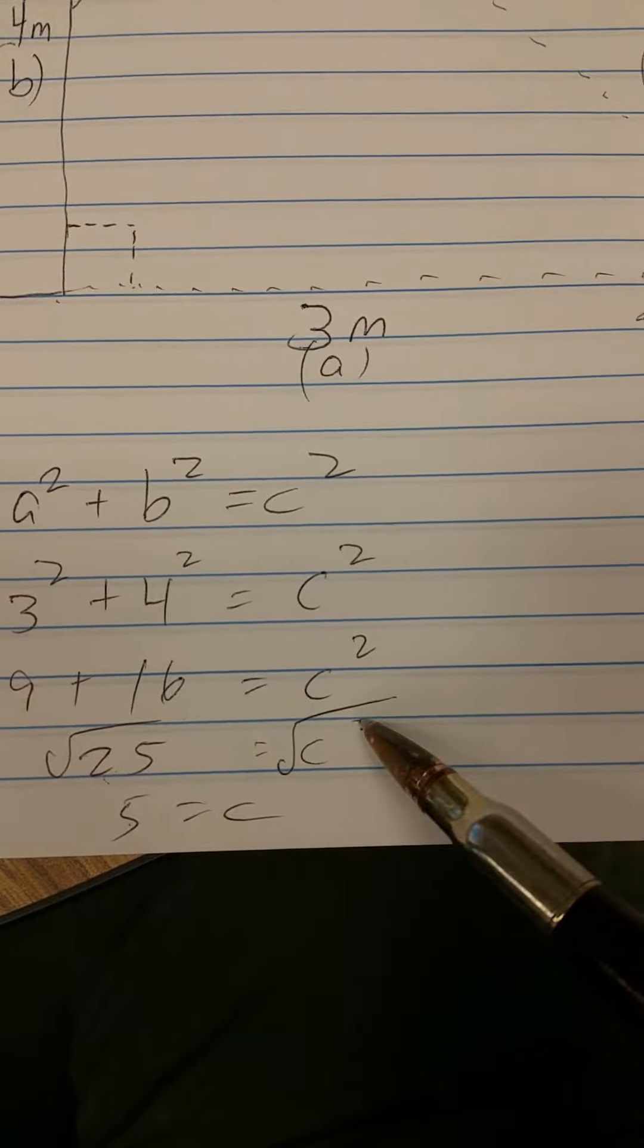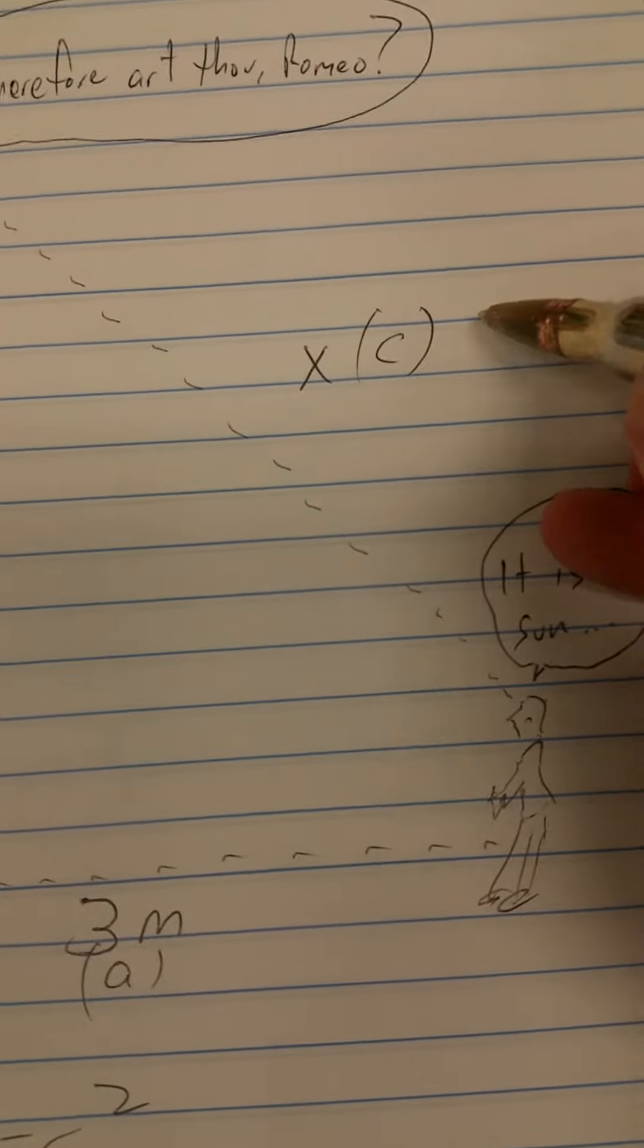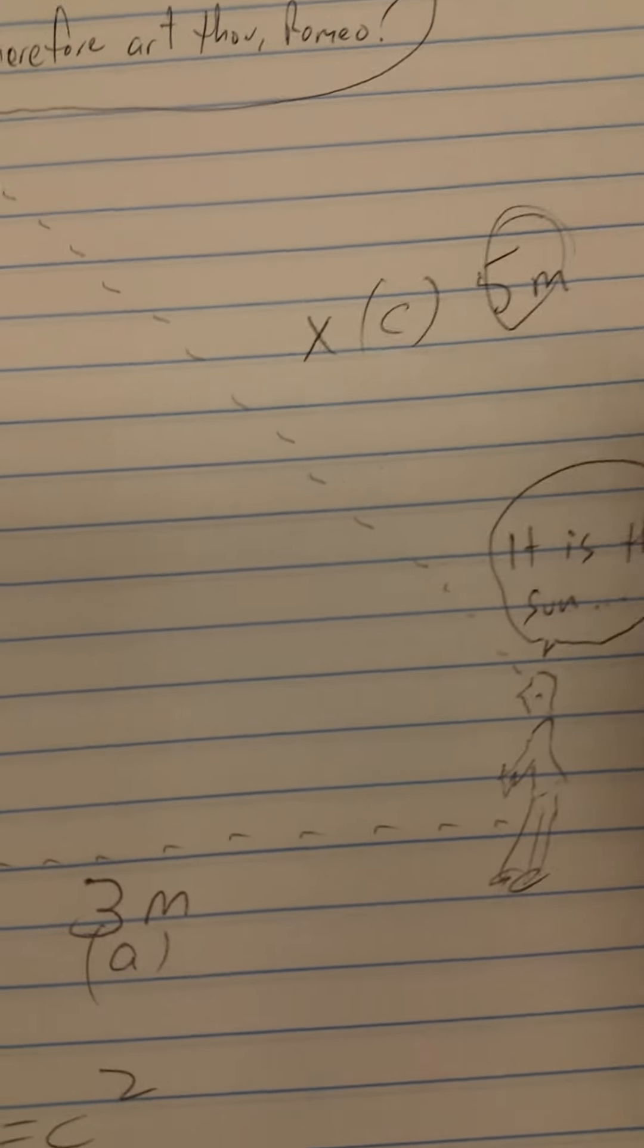Square root of 25 is five, square root of C squared is C, and therefore X or C is five meters.